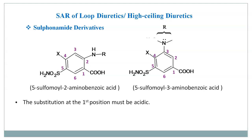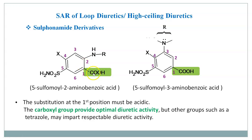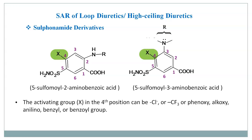The first point is that the substitution at the first position must be acidic. The carboxyl group provides optimal activity, but other groups such as tetrazole are also responsible for diuretic activity. The second point is that the activating group X at the fourth position can be chloride, trifluoromethyl, phenoxy, alkoxy, anilino, or benzyl group.